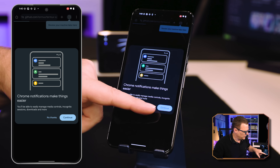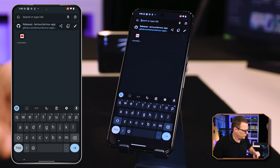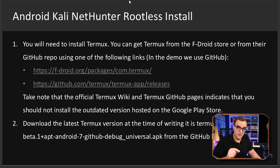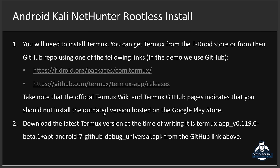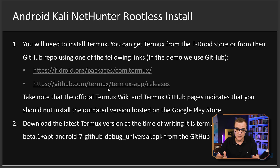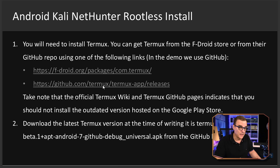First thing we need to do is open up a browser and go to the Termux app URL. There are two places where you can get this: from the F-Droid store or from GitHub. On the official Termux wiki and Termux GitHub pages, they tell us not to use the outdated version of Termux hosted on the Google Play Store. You need to download the software from F-Droid or GitHub. As always, you need to make a decision for yourself whether you want to install the software — it's at your own risk.